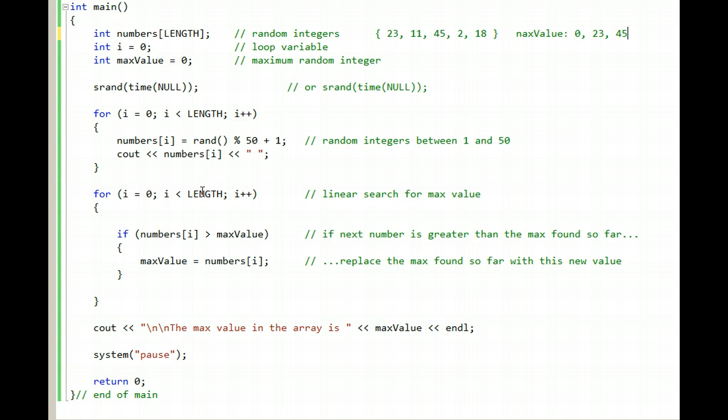And the next time around the for loop, the 2 is compared to max value and it's not greater, so nothing happens. And the last time around the for loop, i increments and becomes 4, and numbers i at that point is 18, and that is not bigger than 45.